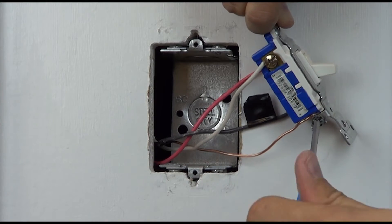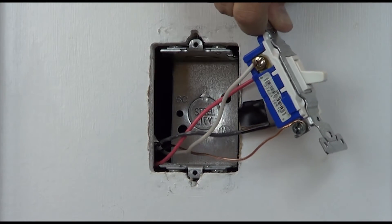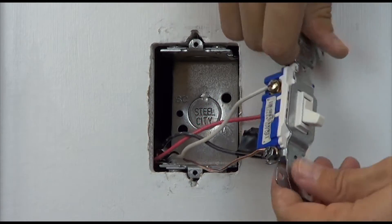Take the ground wire off the existing switch and connect it to the green ground wire on the dimmer.